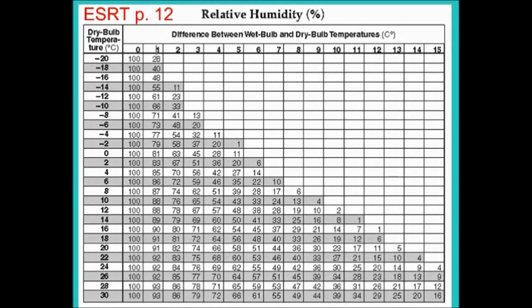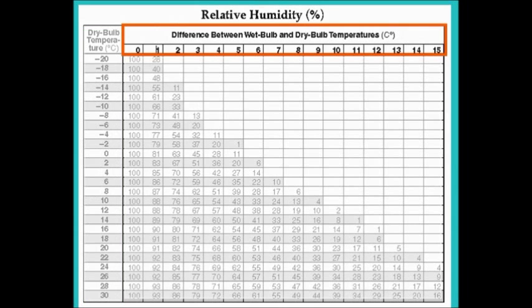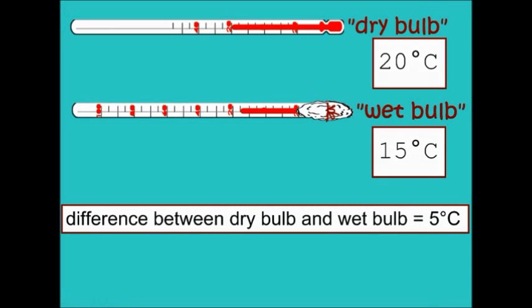Using page 12 of your reference table, on the left-hand side, there's the dry bulb temperature. That's the normal air temperature. And on the top, you have the difference between the wet bulb and the dry bulb temperatures. Now, notice if there is no difference, the relative humidity is 100%.